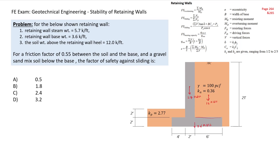The factor of safety against sliding is basically the forces that act against sliding divided by the forces that force your retaining wall to slide. The only horizontal force that will tend to make your retaining wall slide is the horizontal component of the active force Pa.